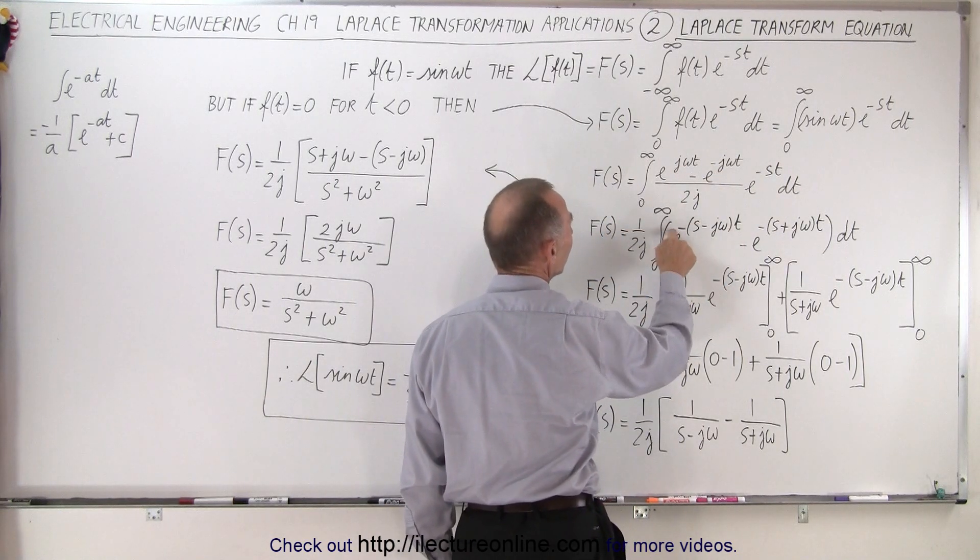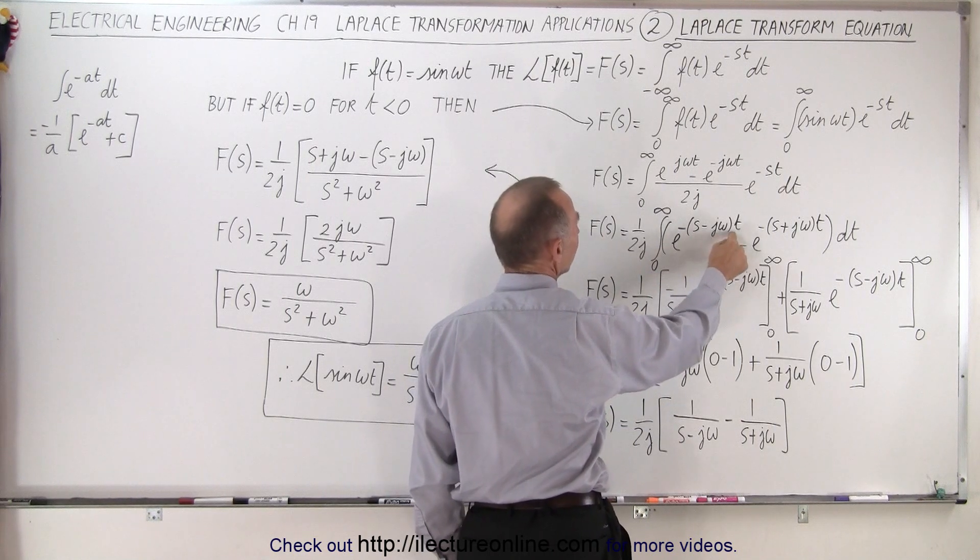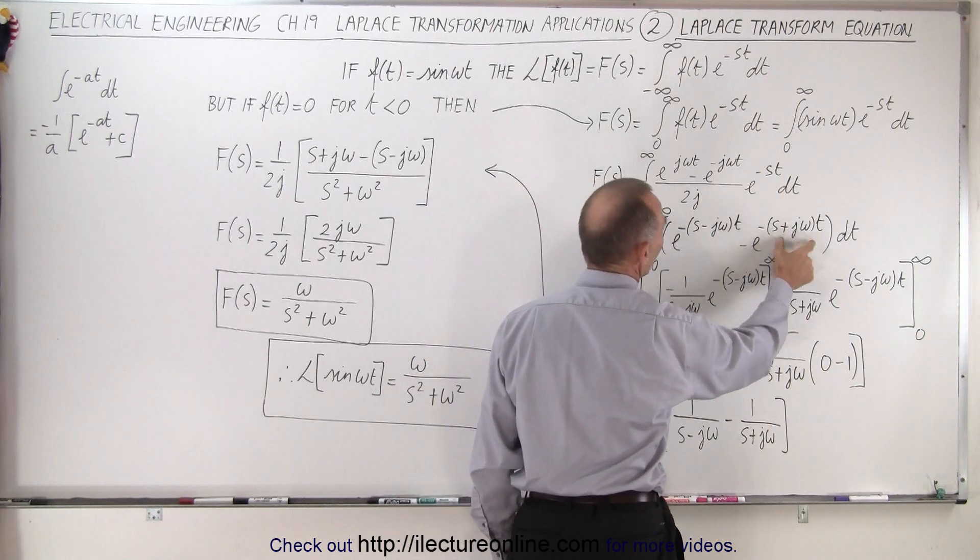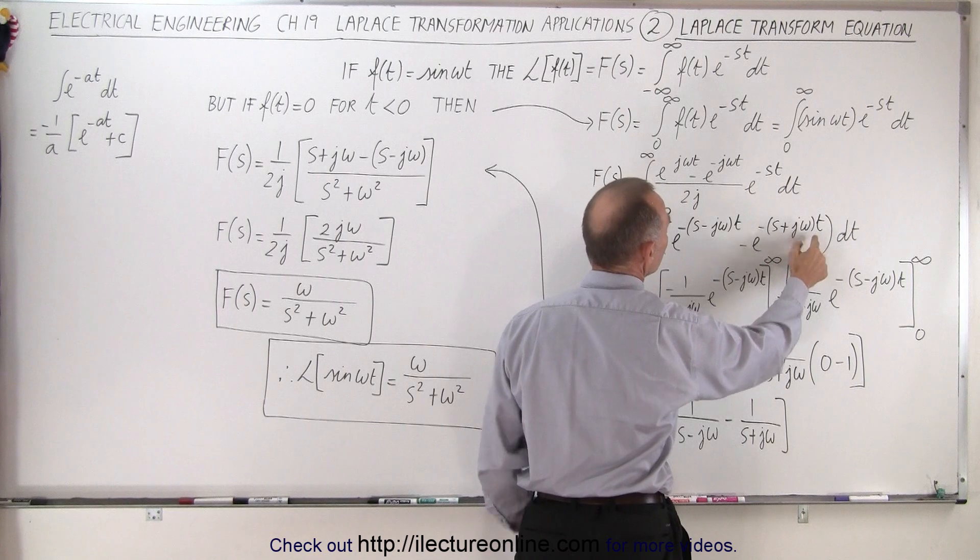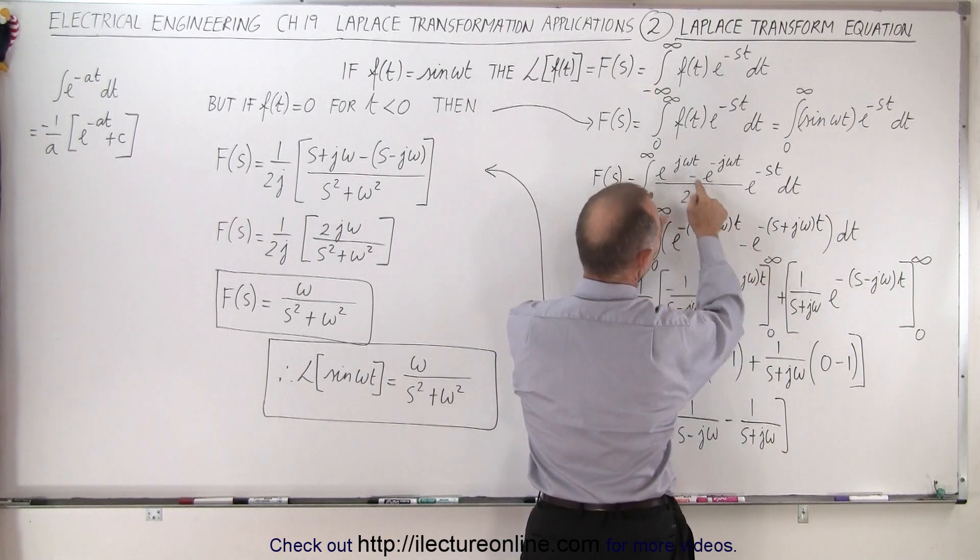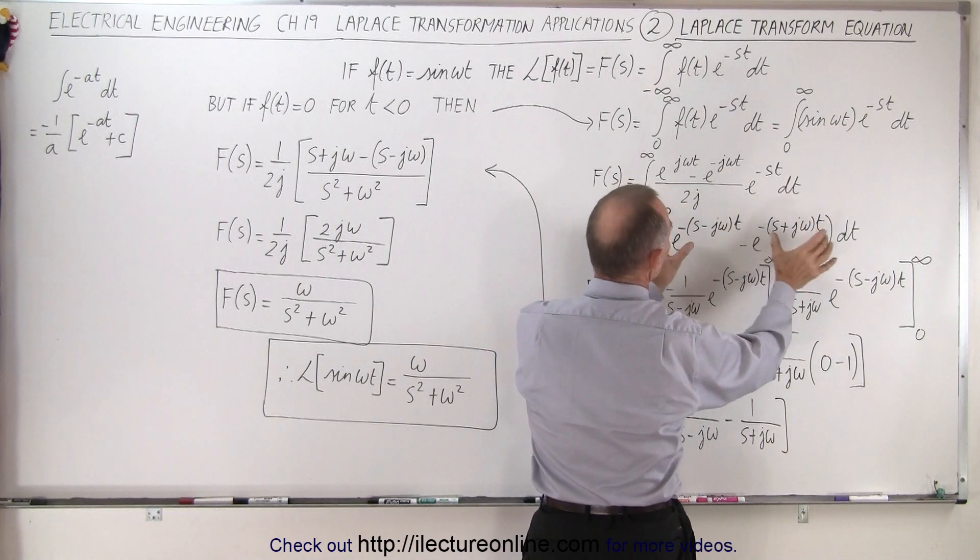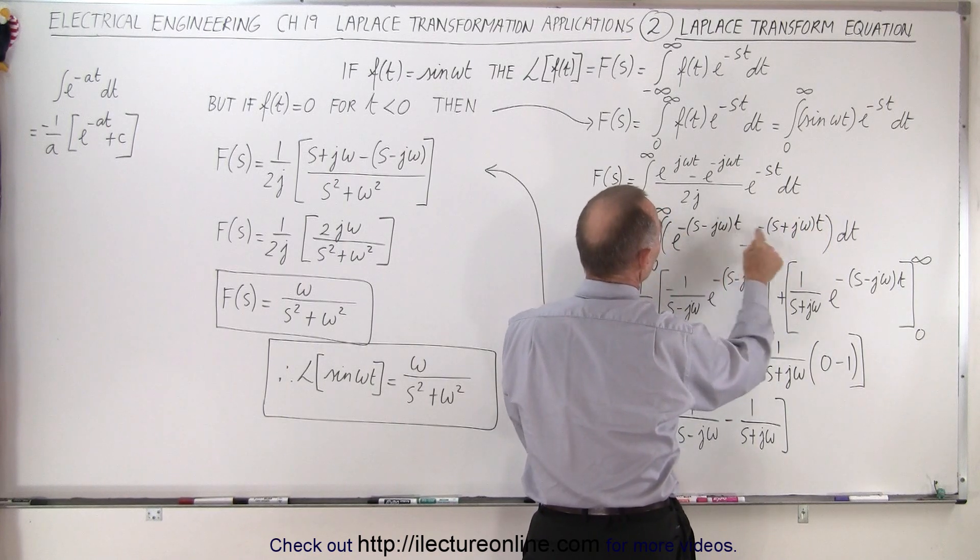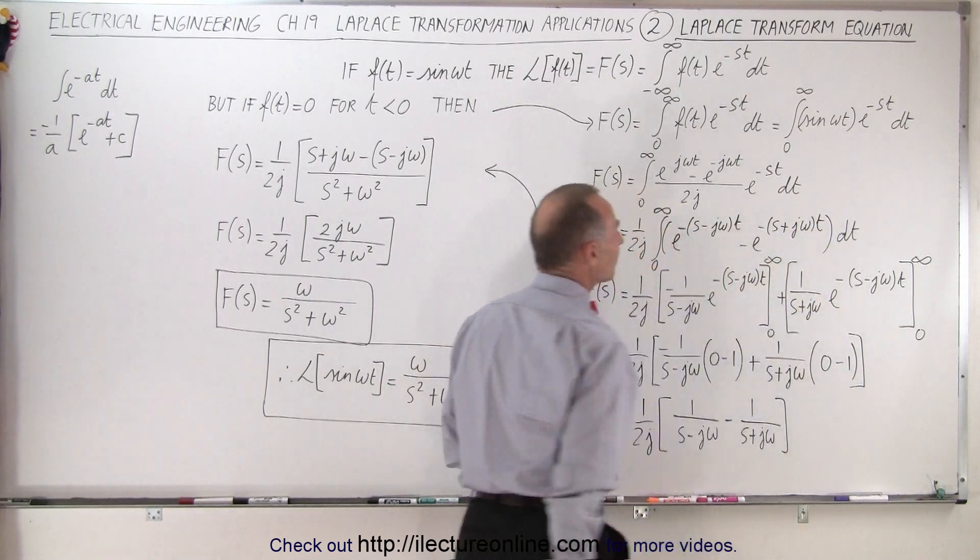When we multiply this in and we take the 1 over 2j out of the integral sign, then we have e to the minus the quantity s minus j omega t and then minus the quantity s plus j omega t. We subtract it from one another so we still have the negative there. We rearrange the terms in such a way that we have a minus and a minus here times dt.